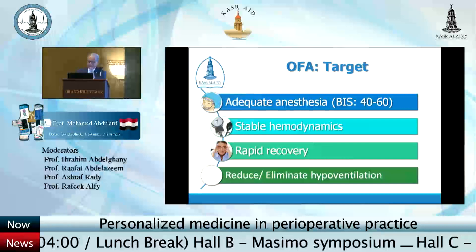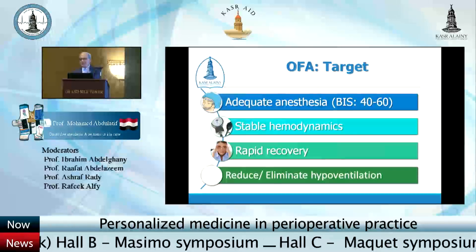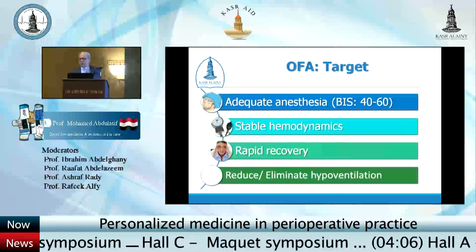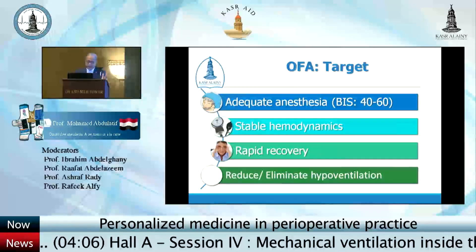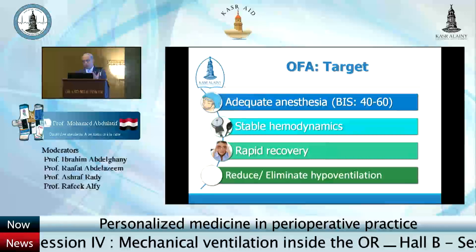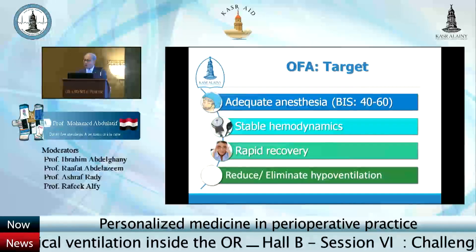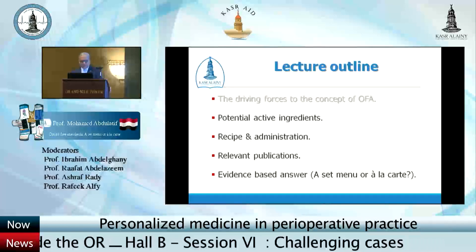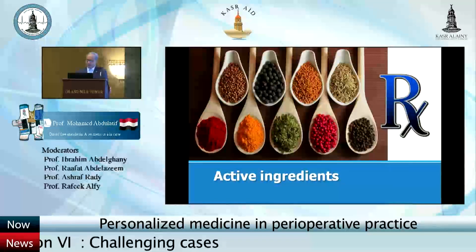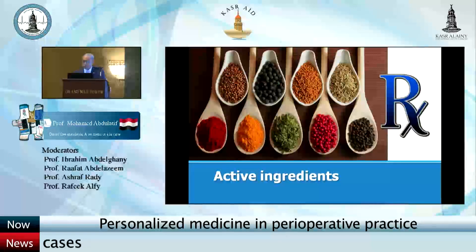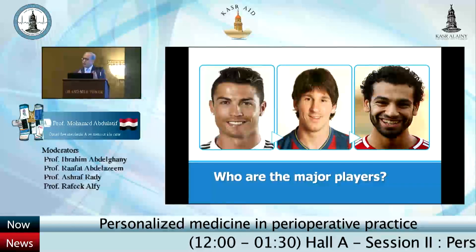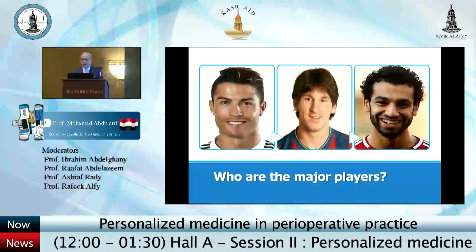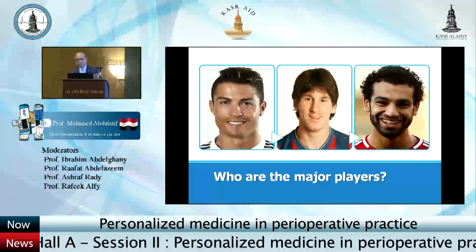The targets of opioid-free anesthesia are: maintaining adequate anesthesia — monitored by bispectral index, which is not optional but a must — maintaining hemodynamics, ensuring rapid recovery, and reducing or eliminating the possibility of respiratory depression. After reviewing the literature, what are the potential active ingredients? If I am going for non-opioid analgesics, who are the major players? Let me hear from the audience.